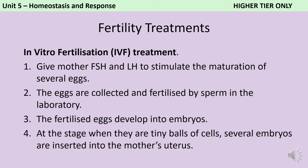If this is not successful then the next step may be in vitro fertilization treatment. In vitro means that rather than fertilization happening inside the woman's body, it's happening in a petri dish. The first step is to give the woman a high dose of FSH and LH, causing several eggs to mature at the same time. These are then harvested and fertilized by sperm in a petri dish in the lab. Once they start dividing they develop into embryos, and several embryos are simultaneously implanted into the woman's uterus, maximizing the chance that at least one will implant and a viable pregnancy will occur.